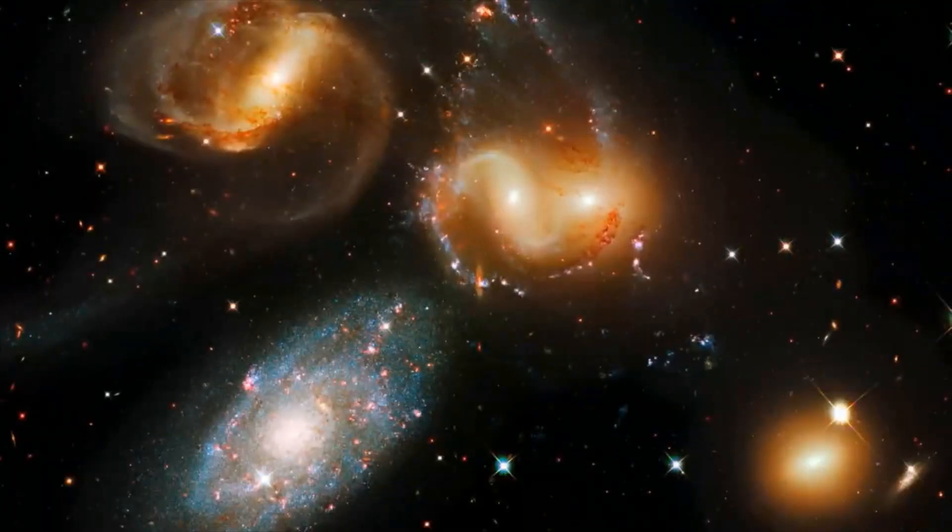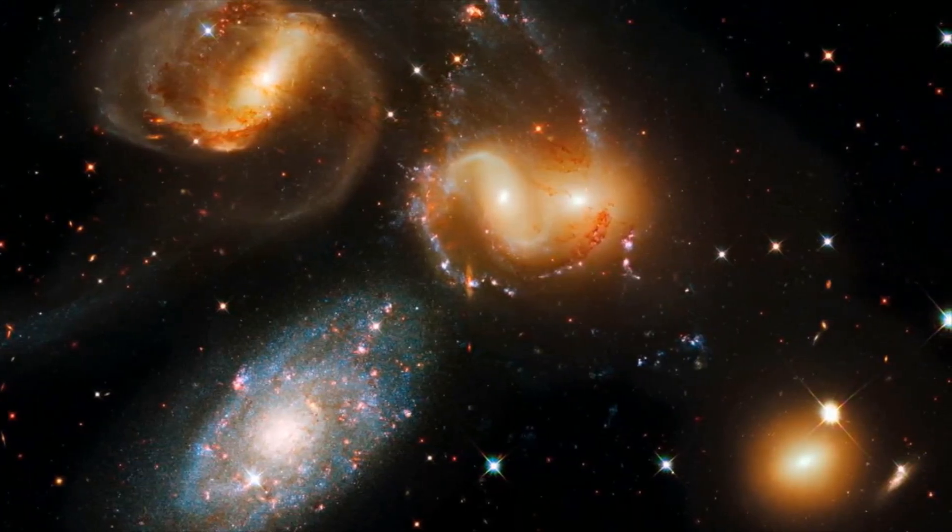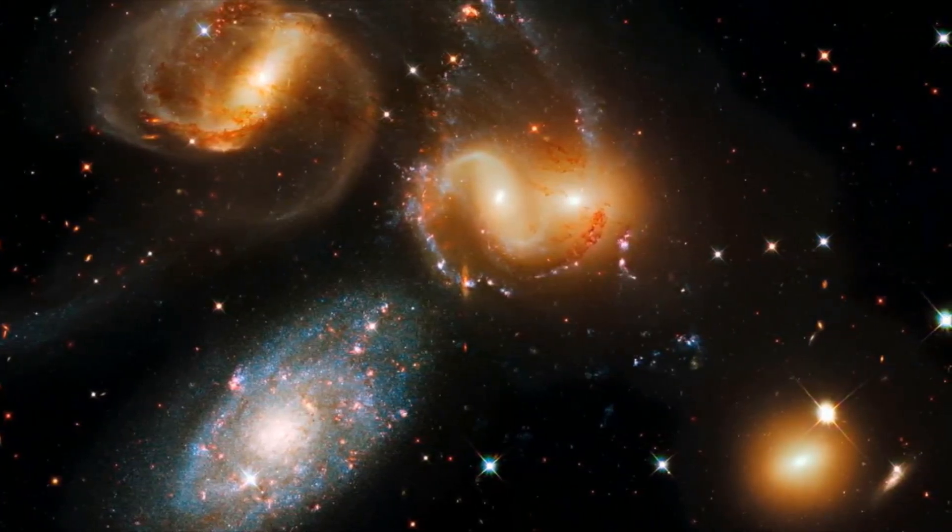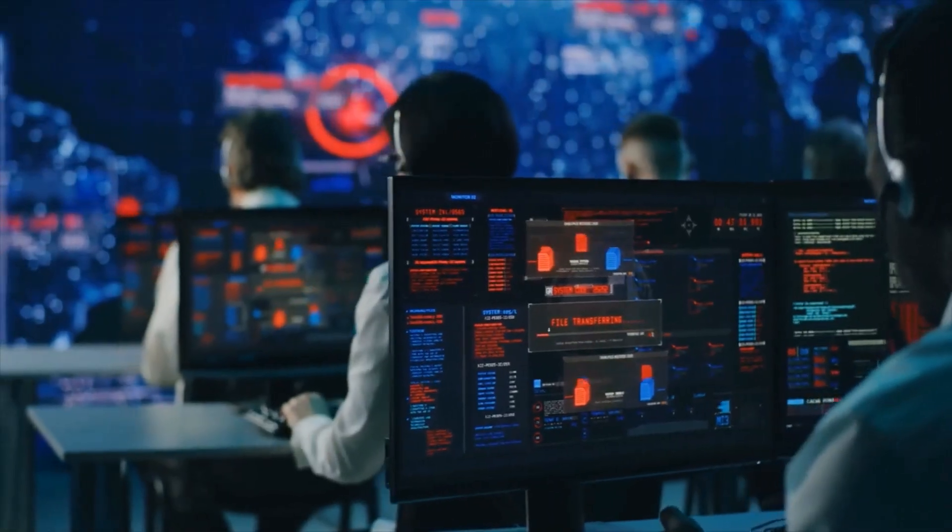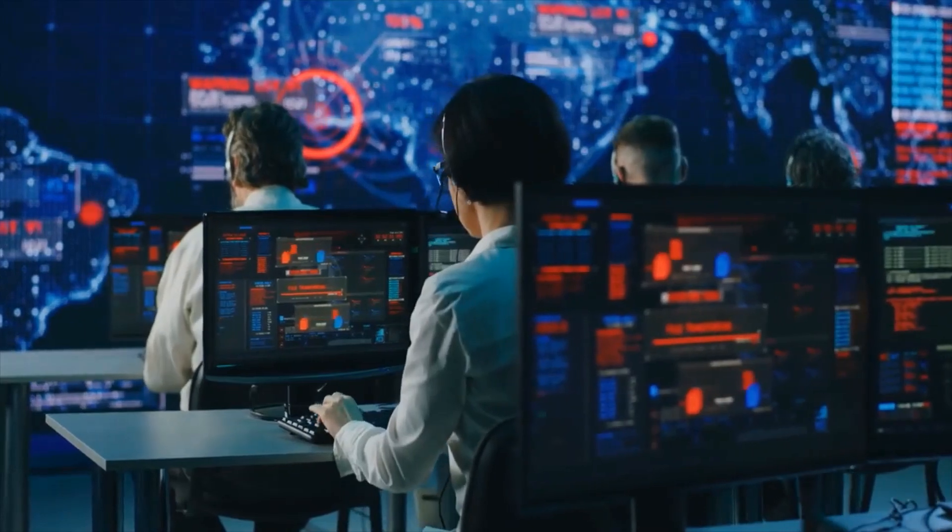Another early release picture of Stephan's Quintet, a tight collection of galaxies in Pegasus, also revealed three possibilities. The fact that each team has its own numbering system makes it challenging to keep track of all the new discoveries.